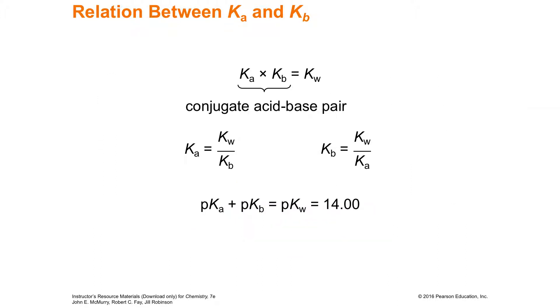K sub A times K sub B equals K sub W. And you simply find what you don't have by dividing what you do have into the K sub W. 1.0 times 10 to the negative 14 divided by K sub B gives K sub A, or 1.0 times 10 to the negative 14 divided by K sub A gives K sub B.